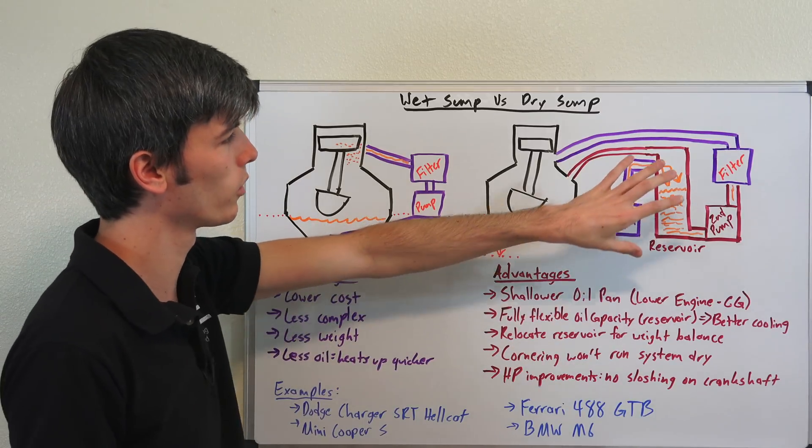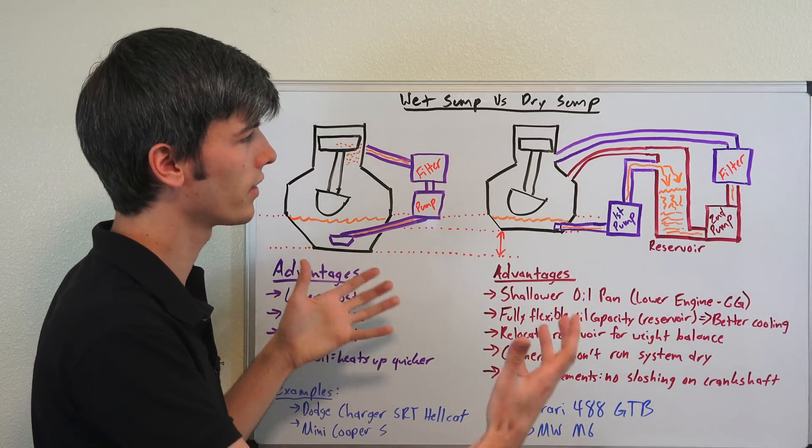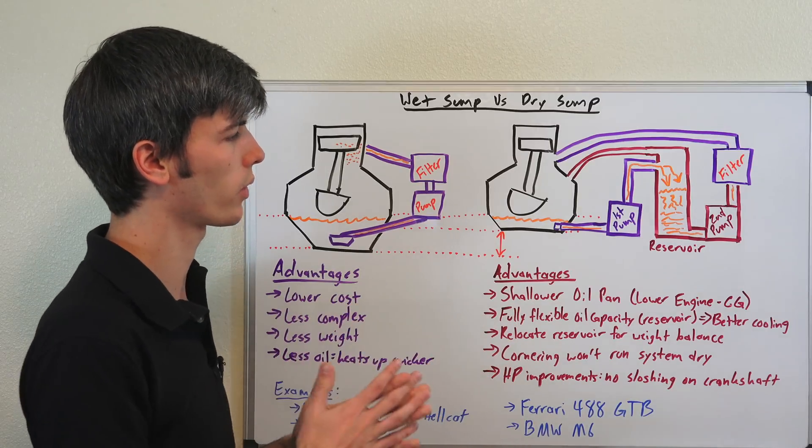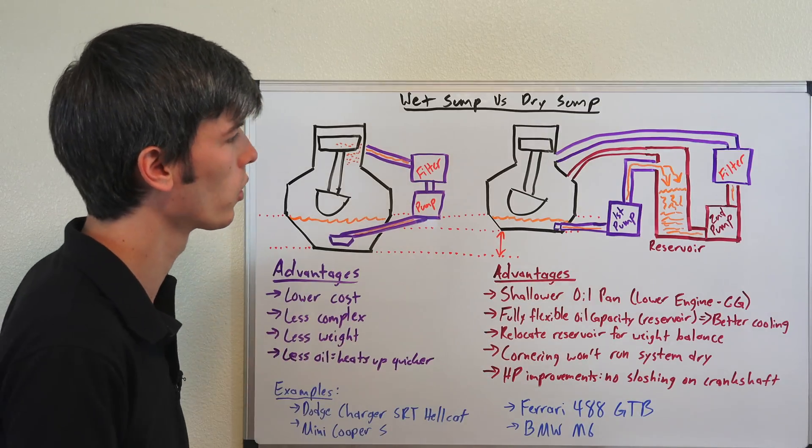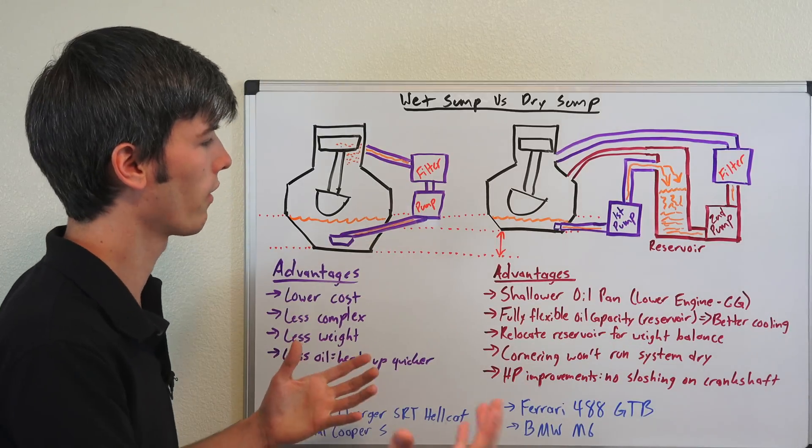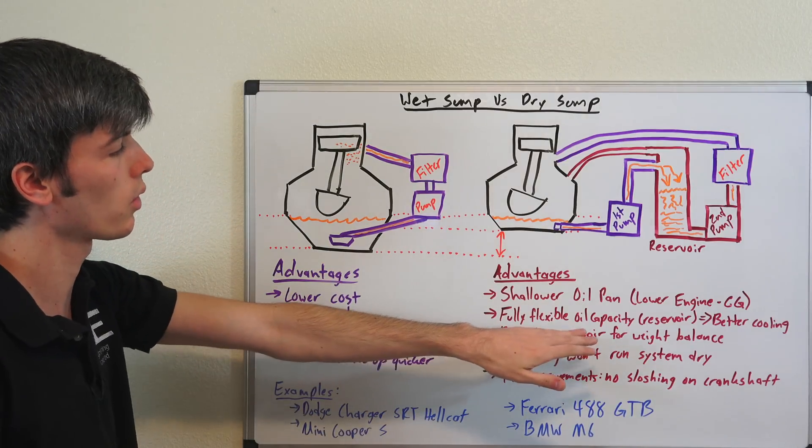Now if you use a large reservoir, this is ideal for racing applications because you have more oil capacity and that means it's going to take longer for that oil to be saturated with heat, which means you're going to have better cooling. So ideal for track scenarios from a cooling perspective to have a larger oil capacity. It also allows you to relocate the oil reservoir for weight balance.